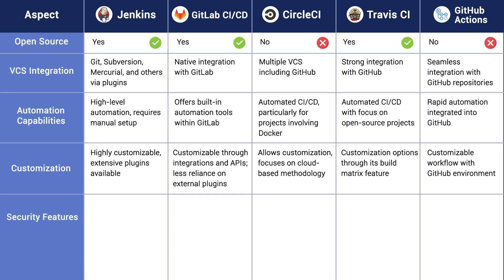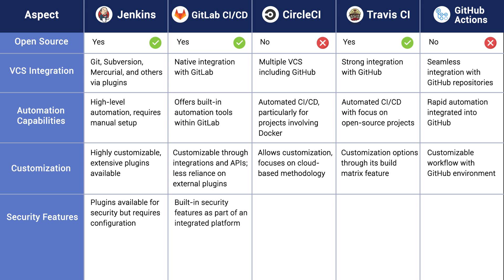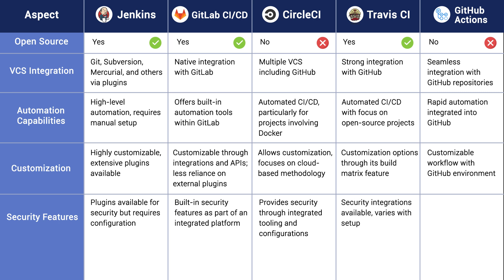Continuing with the security features. Jenkins has plugins available for security but requires configuration. GitLab CI/CD has built-in security features as part of an integrated platform. CircleCI provides security through integrated tooling and configurations. Travis CI has security integrations available, but it varies with setup. GitHub Actions has a robust method for handling sensitive data like API keys.